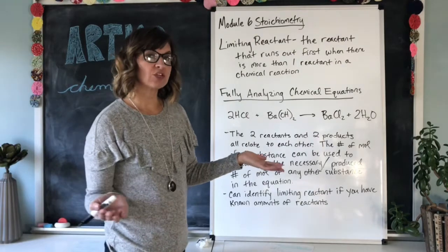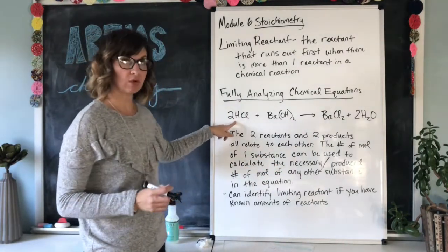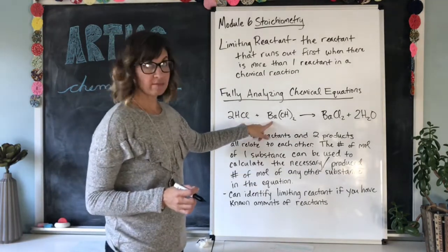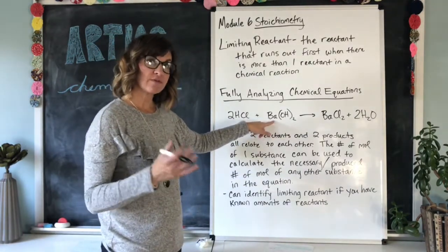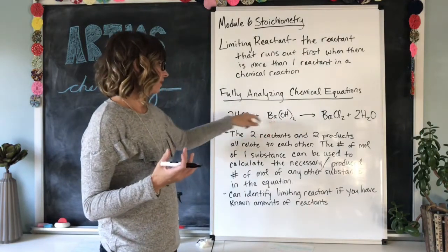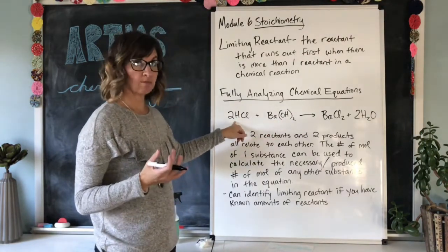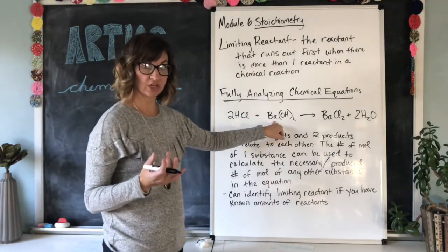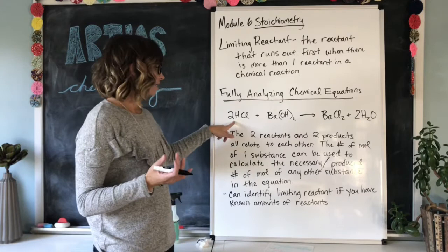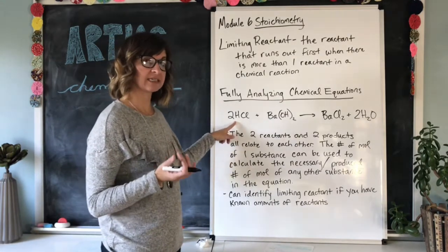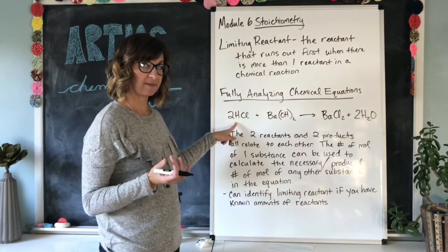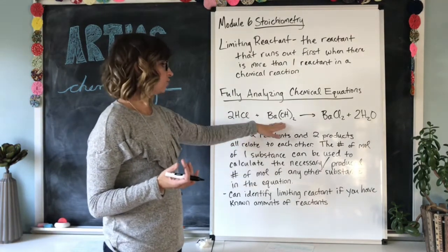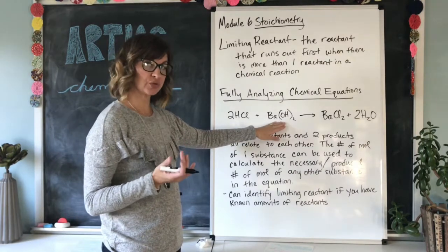Well, the balanced equation tells us that for every two moles of hydrochloric acid, we need one mole of barium hydroxide. So if you know that you have less than two moles of HCl and you do have one mole of BaOH₂, this is going to be your limiting reactant — the hydrochloric acid is going to run out first. For every two moles of HCl needed, one mole of BaOH₂ is needed.